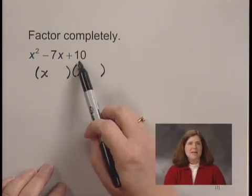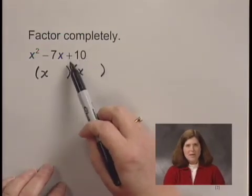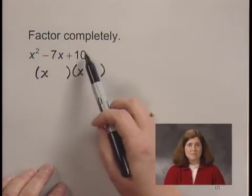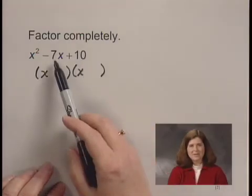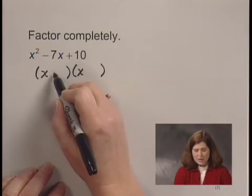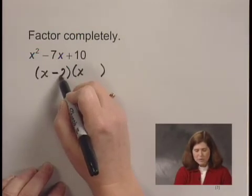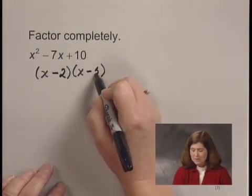10 can be factored as negative 1 times negative 10 or negative 2 times negative 5. Well, negative 2 plus negative 5 is negative 7, so I write a minus 2 and a minus 5.